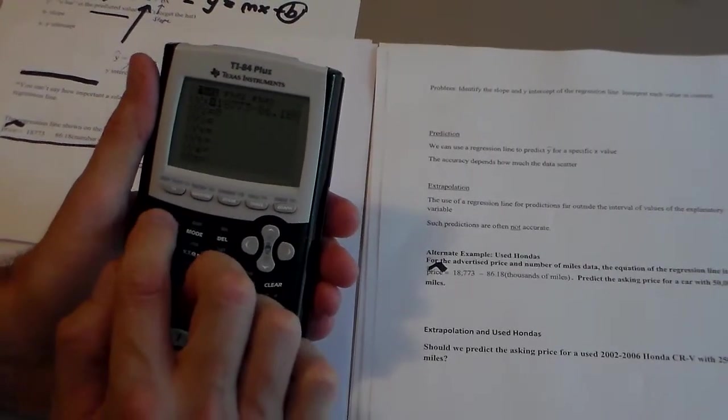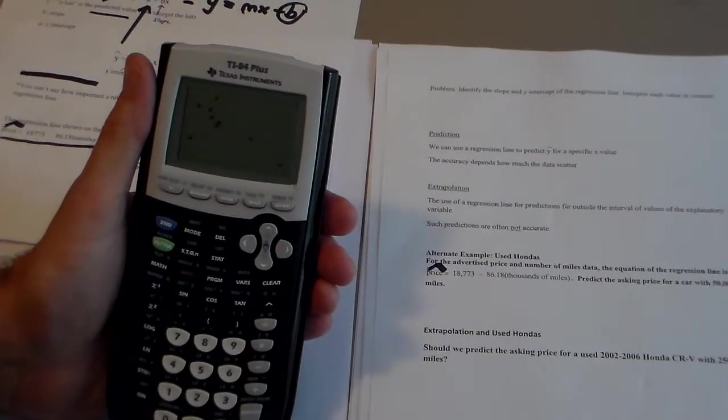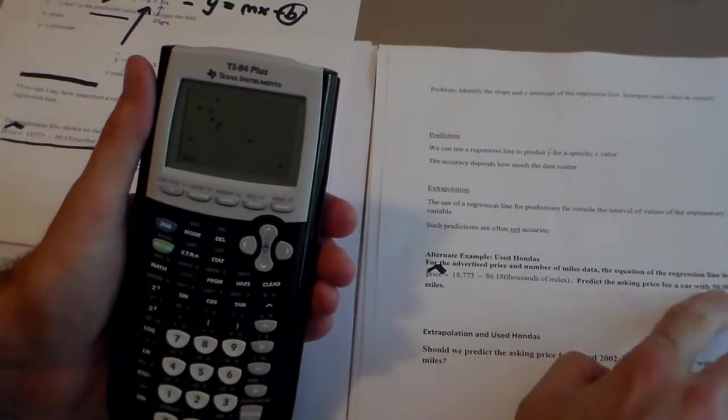and I could go to second trace, which is calc. Value is number one. It says 50,000 miles.